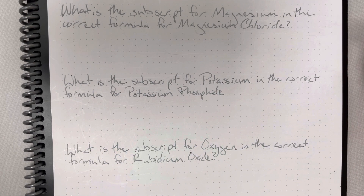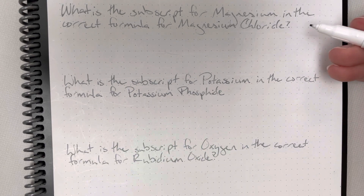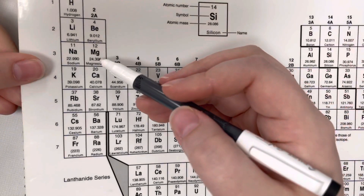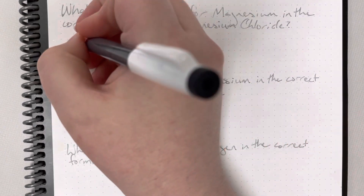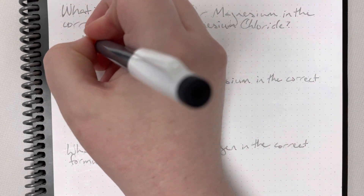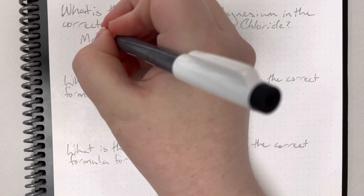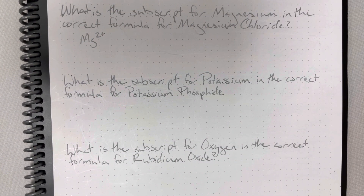What is the subscript for magnesium in the correct formula for magnesium chloride? First I need to find the formula for magnesium chloride. Magnesium's symbol is Mg and it is in column 2, which means it has two valence electrons. It's going to give away those two valence electrons — giving a gift is a nice thing to do — so it's going to have a charge of positive 2.